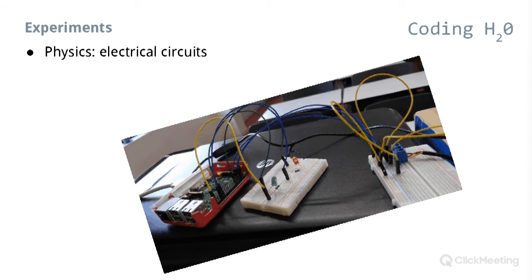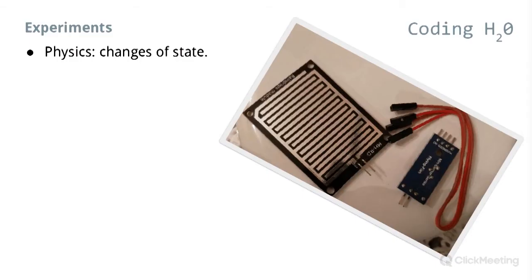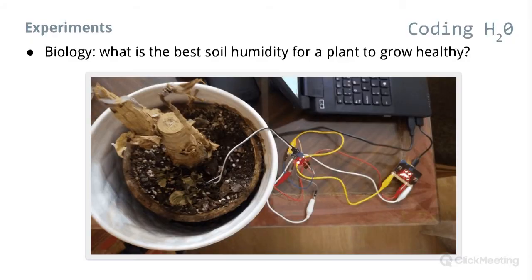You can also control different electrical circuits using coding and programming languages — here in the image we have a red LED and a green LED that we control with a program. To study changes of state such as condensation, you can use a rain sensor, which is very easy to use — a good one for beginners. One of the questions our students tried to answer last year was: what is the best soil humidity for a plant to grow healthy? This activity was published by Science on Stage and we did it with the micro:bit.